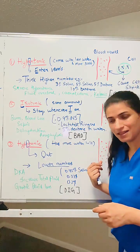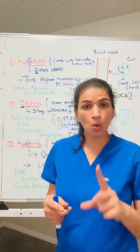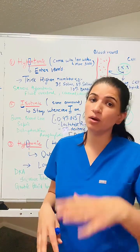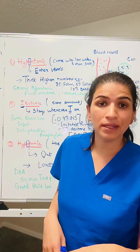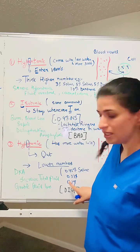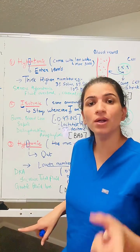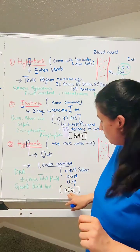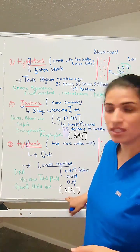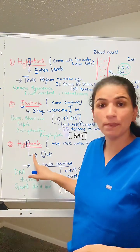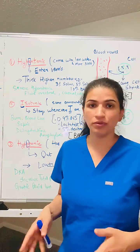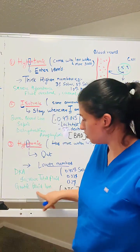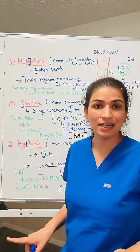Hypo means low, so think about lower numbers — lower than isotonic, lower than 0.9. Examples are 0.45%, 0.33%, or 0.2% — any low number is hypotonic. For when to give it, use the mnemonic 'DIG': D is for DKA patients, I is for increased total fluid when the patient requires more fluid, and G is for gastric fluid loss.